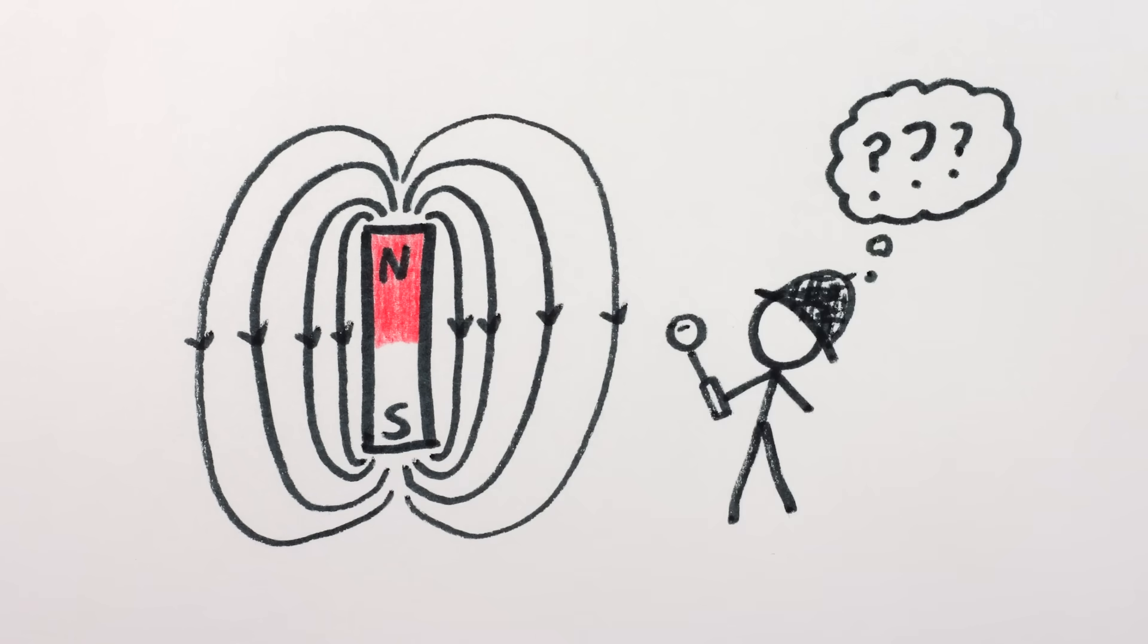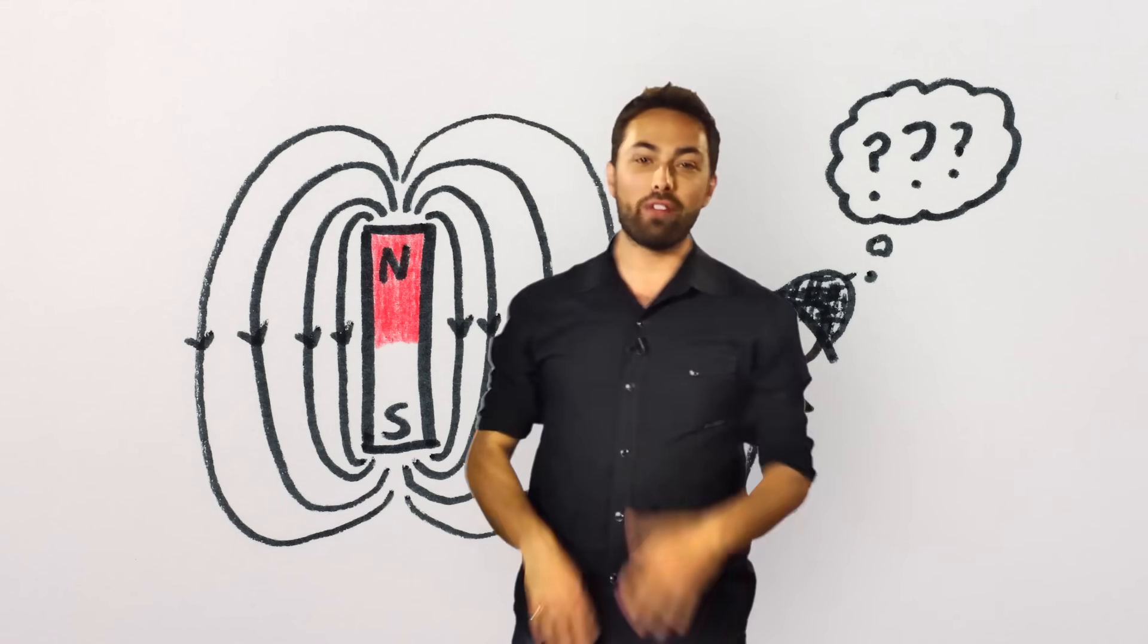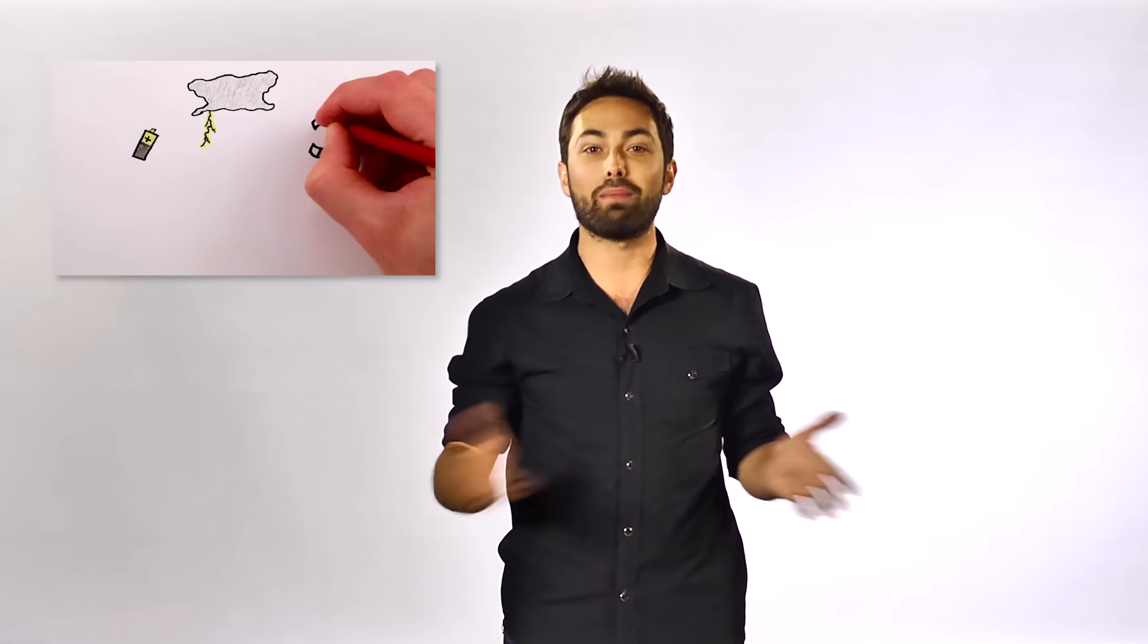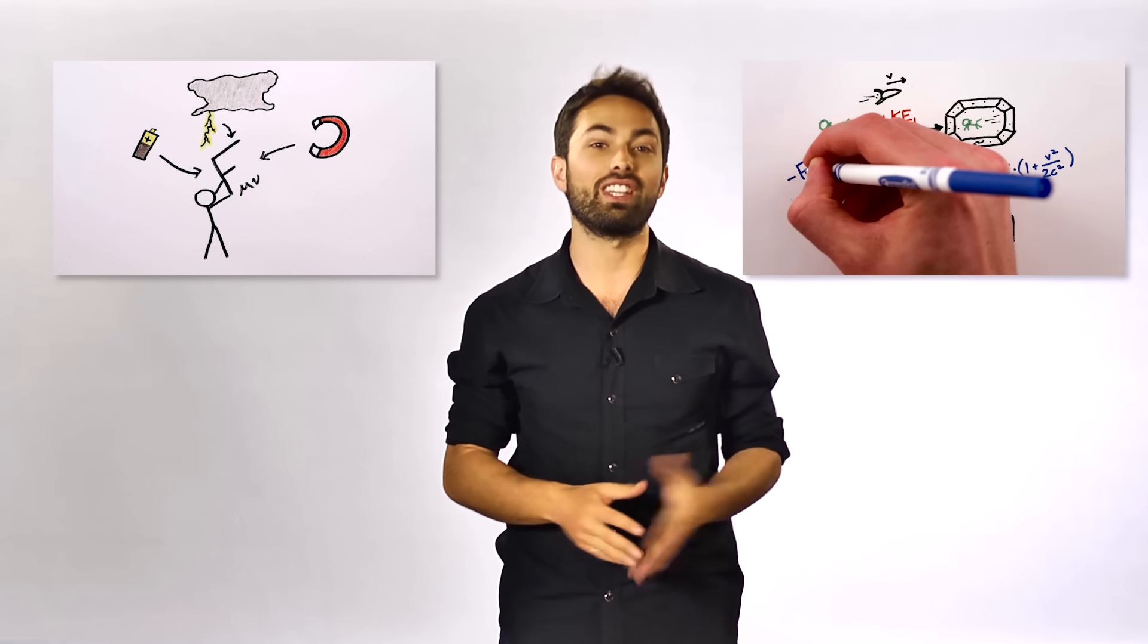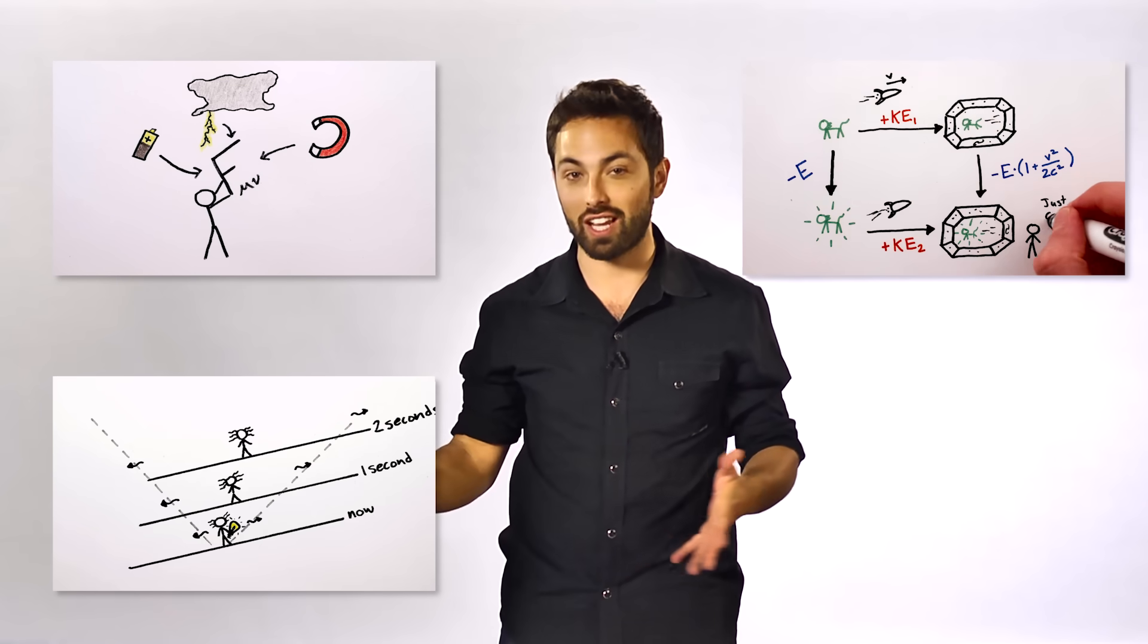Where do magnetic fields come from? Well, that's easy, Henry. We've known for a long time that electricity and magnetism are really just two sides of the same coin. Kind of like mass and energy or time and space. They can be transformed into one another. And in fact,